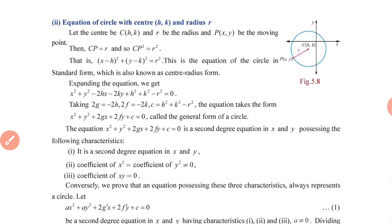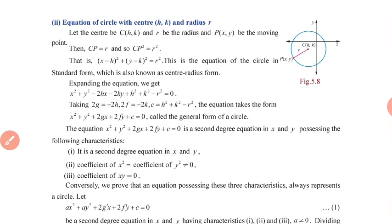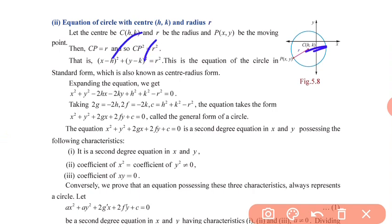Next, the equation of the circle with center (h, k) and radius R. When the center is shifted from (0,0) to (h, k) with the same radius, we replace accordingly and get: (x minus h) squared plus (y minus k) squared equals R squared. This is known as the standard form of the circle equation.